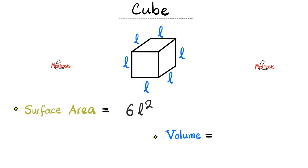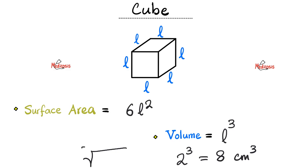How about the volume of the cube? The volume of the cube is the side length cubed — and that's why we say 'cubed.' For example, if each length is 2, then 2 cubed is 2 times 2 times 2 equals 8 centimeters cubed, and this is where you get the word 'cubed' from. If you want to go back from 8 to 2, we call this the cubic root. For the square, if you want to go back from the area to the side length, you square root it.